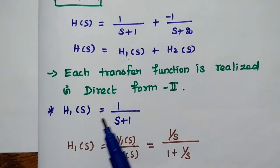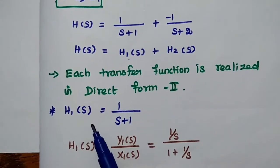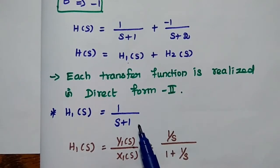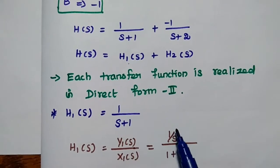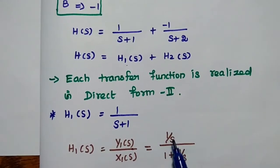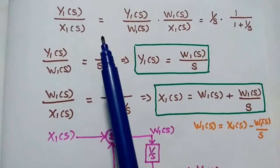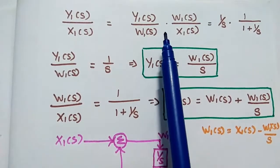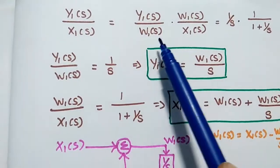Starting with the first transfer function H1(s) equals 1 divided by (s plus 1), we write H1(s) as Y1(s) by X1(s). In the direct form 2 method, the first step is to divide all terms by the highest power of s. Here the highest power is s itself, so we divide all terms in both numerator and denominator by s, giving (1/s) divided by (1 plus 1/s).